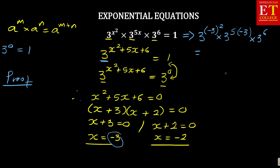So, this is equal to 1, which is equal to my right hand side. So, it means the value of x is correct. Usually, when the first one is correct, the second one can also be correct. So, you can prove it. Let's prove the second one as well, because sometimes you might find that it is not balancing.